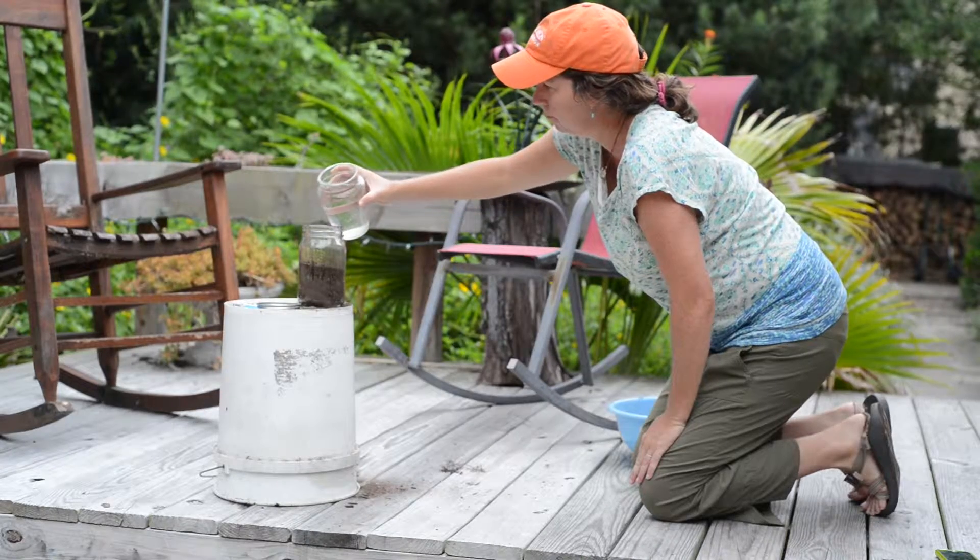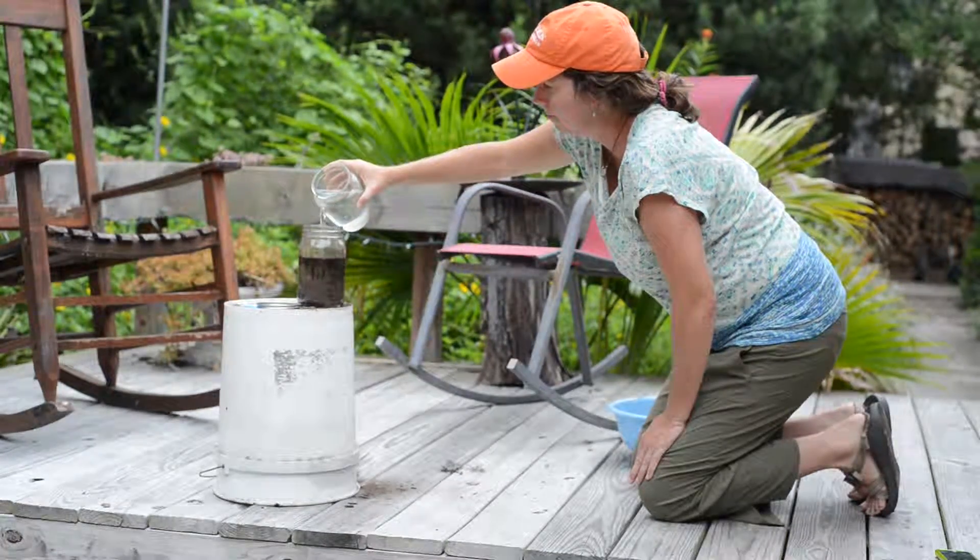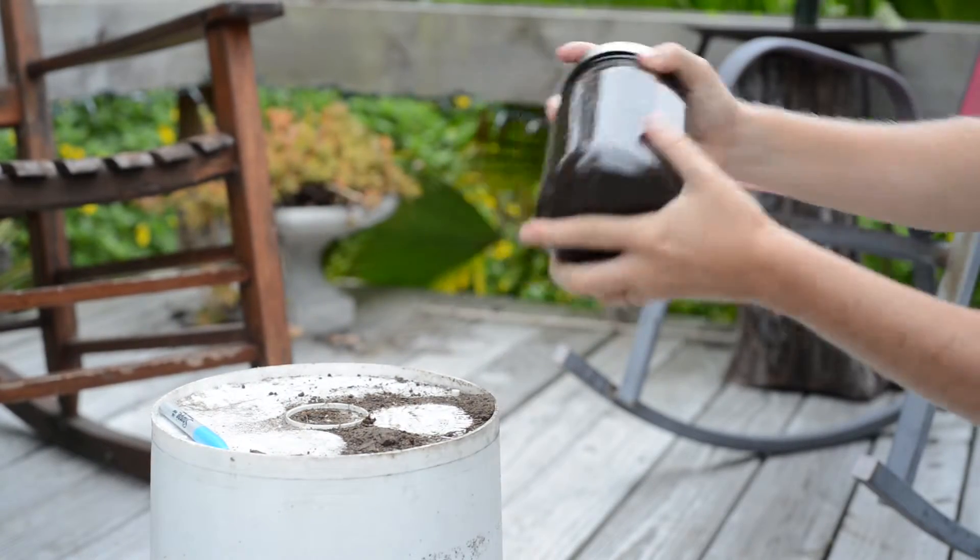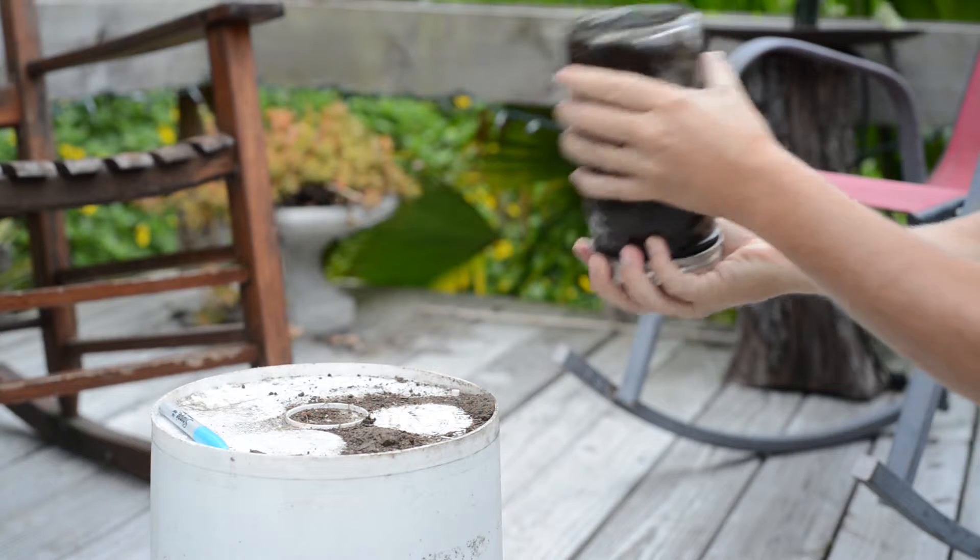Add water to the jar, leaving some space at the top, then cap it. Shake the jar vigorously until the soil turns into a uniform slurry.